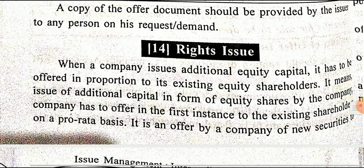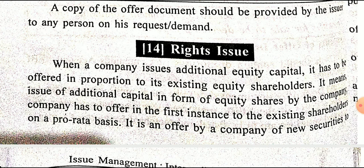There are various types of public issue: public issue, right issue, and private placement. Public issue means shares offered to the general public. Right issue means shares offered to the existing shareholders. Private placement means shares offered to a particular group of persons. In a public issue, a prospectus must be issued compulsorily. In a right issue, there is no requirement of a prospectus because shares are offered to existing shareholders only.